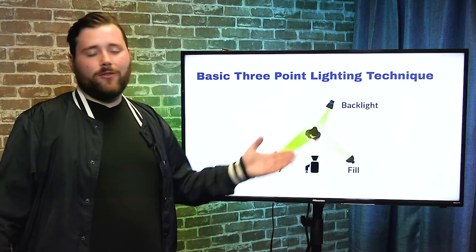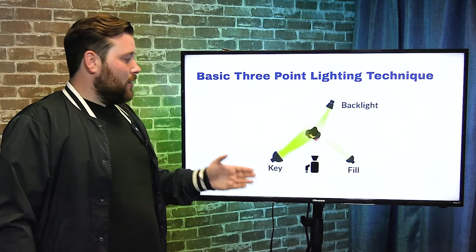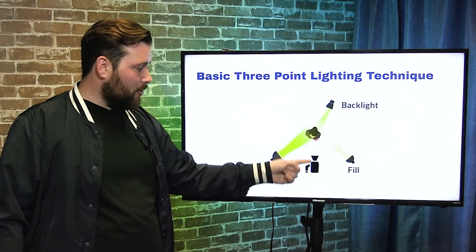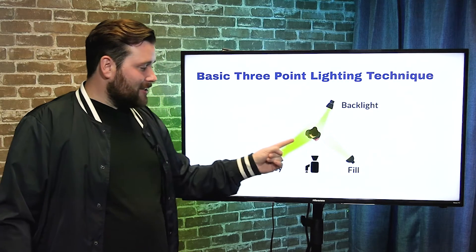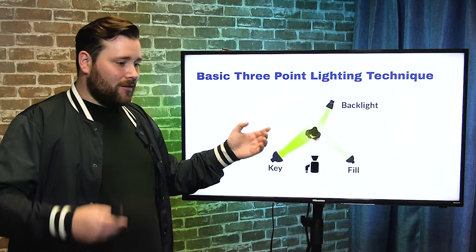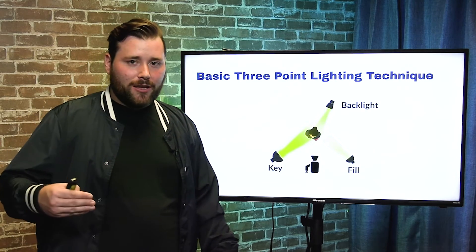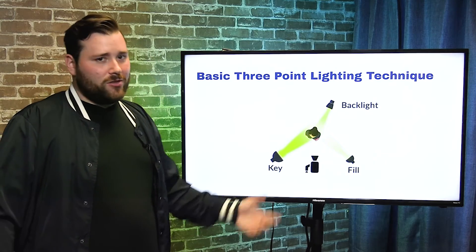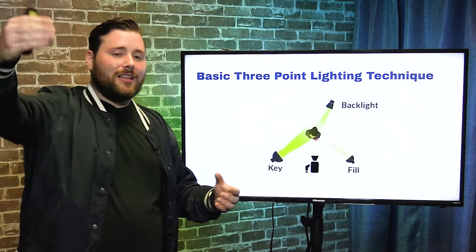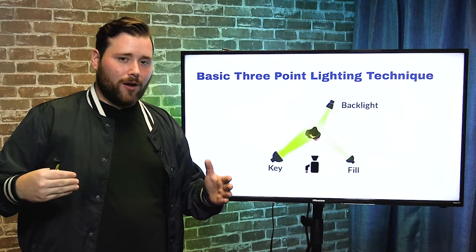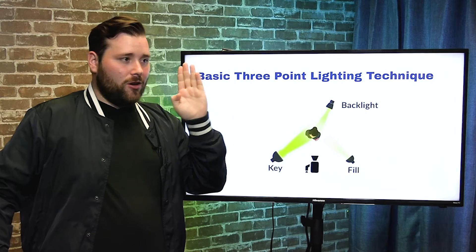Now let's talk about lighting — it's so important to have good lighting. Ideally you'd use a basic three-point lighting technique. You have your subject and your camera. First is the key light — a stronger powered light that lights most of the subject and ensures they're properly exposed. A lot of times when we're cranking things out quickly, that's all we use — just one light to light the person.